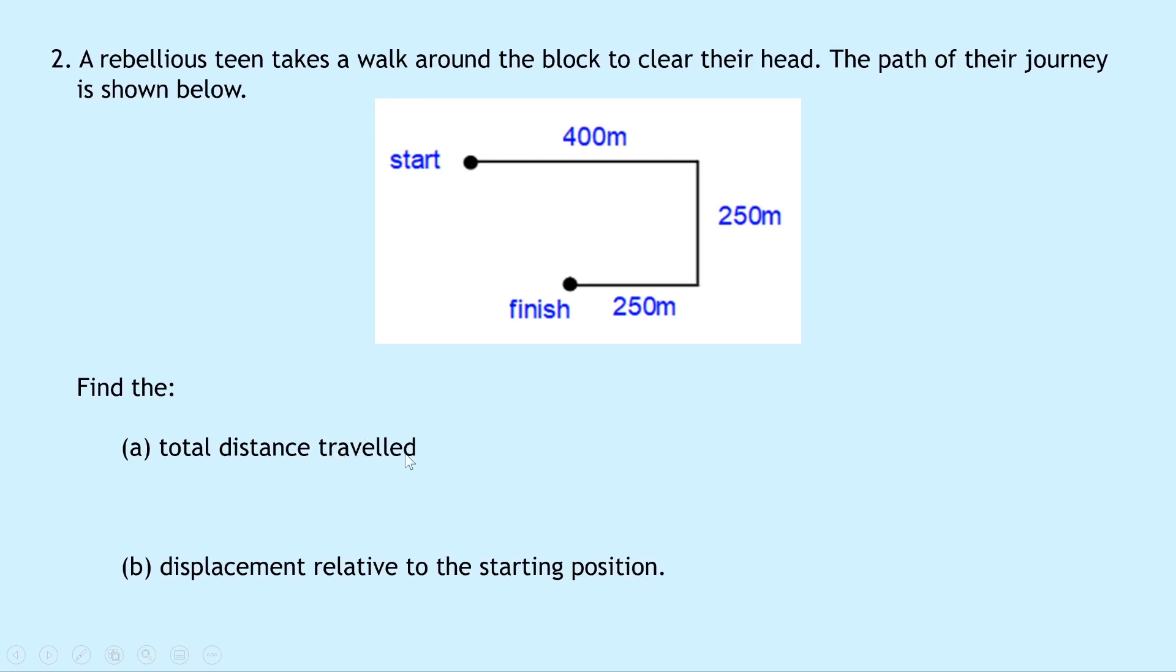So for part A, the total distance travelled, well this is quite easy and quite simple to do. All we do is we add up the distances here in metres. So 400 plus 250 plus 250 gives us a total distance of 900 metres.